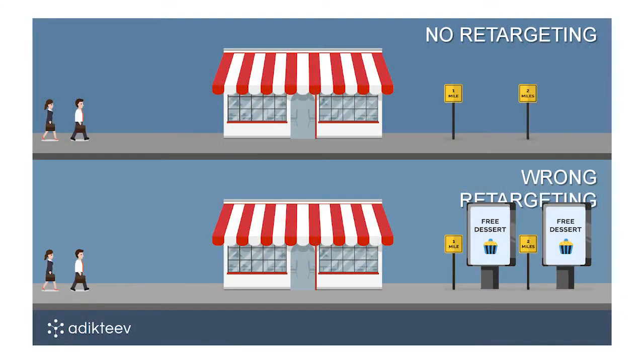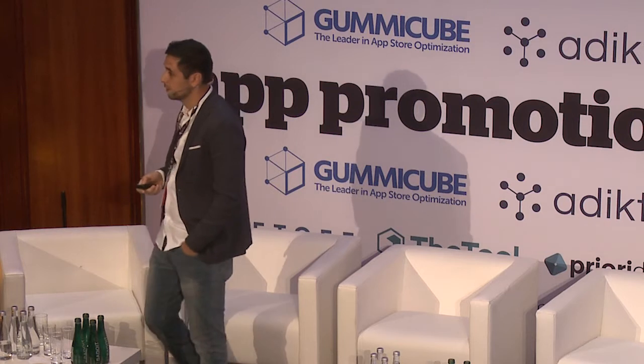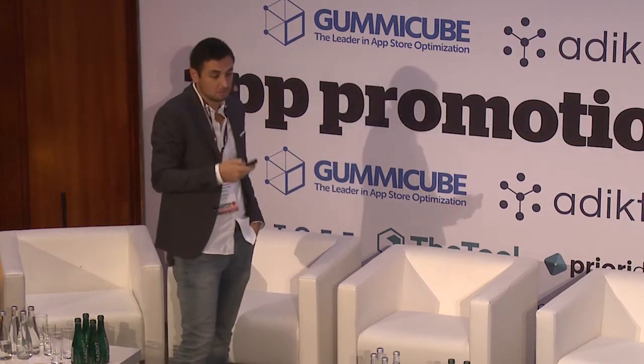Here's an analogy I use a lot. Instead of owning an app, say you own a restaurant. You have somebody walking in front of your restaurant — some users will come in, some will walk away. Without any retargeting campaign in place, users walk in front of the restaurant and just walk away forever. Another user can walk in front, like what they see, enter the restaurant, and start spending money. That's without retargeting.